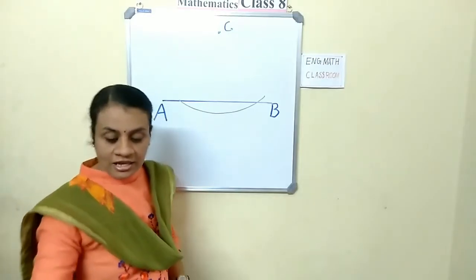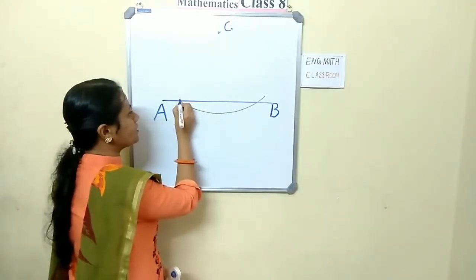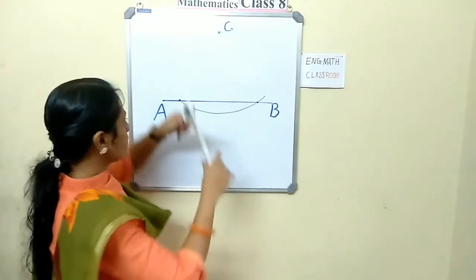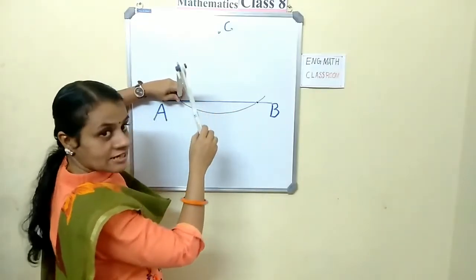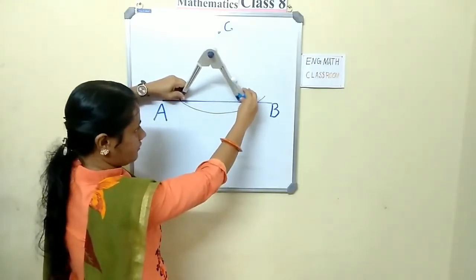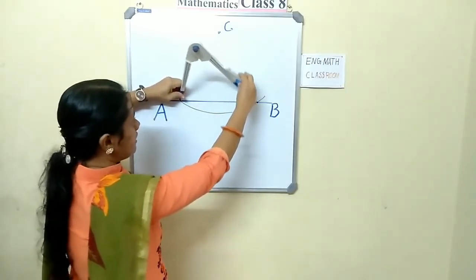Here, you got two points. One, two. Keeping this point as center. You take a three-fourth distance. I have taken this much distance. Cut an arc.